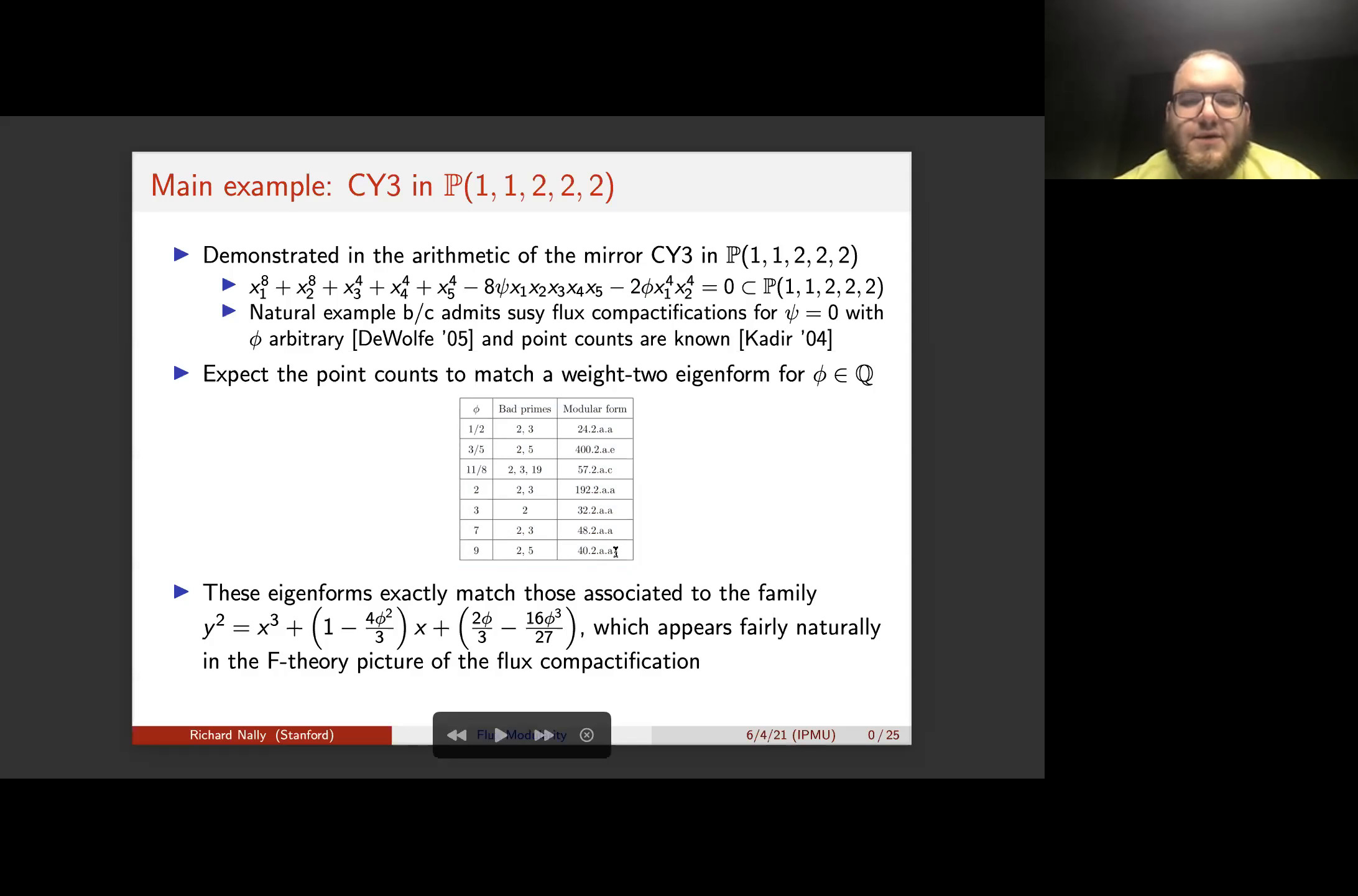And it turns out that these modular forms for each value of φ exactly agree with the modular form associated to the elliptic curve in this family at the appropriate value of φ. And this family of elliptic curves, I'll show you later on, appears fairly naturally in the F-theory picture of the flux compactification.